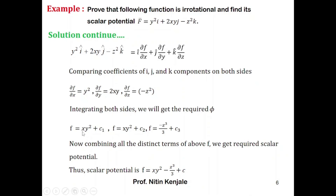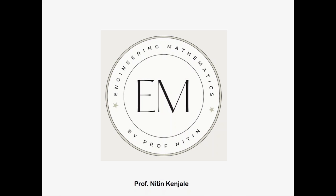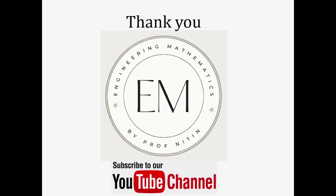So phi equals xy² minus z³/3 plus constant c. The required scalar potential is xy² − z³/3 + c. I hope you understood what is scalar potential of f bar and how to find it. Thank you for watching this video. Please subscribe to my YouTube channel for more engineering mathematics videos and press the bell icon for updates.